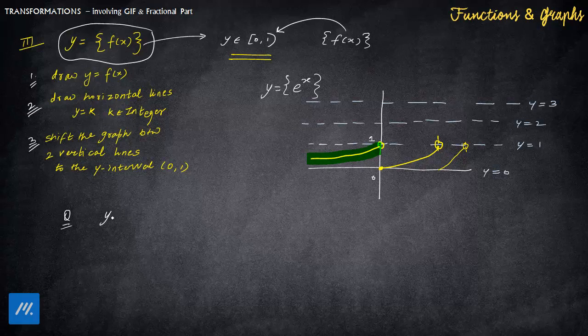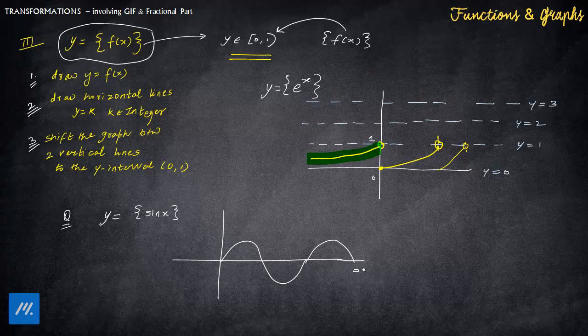So understand, y = fractional part of sin x, interesting case. Let's say this is the graph of sin x and let's say we draw it till 3π. 3π, 2π, π, 0. We know that the entire graph of sin already lies between -1 to 1.